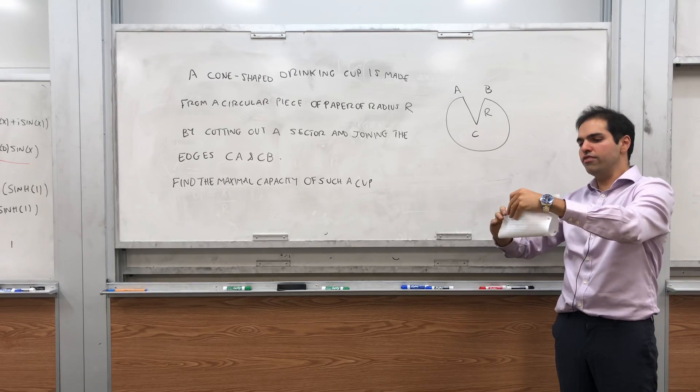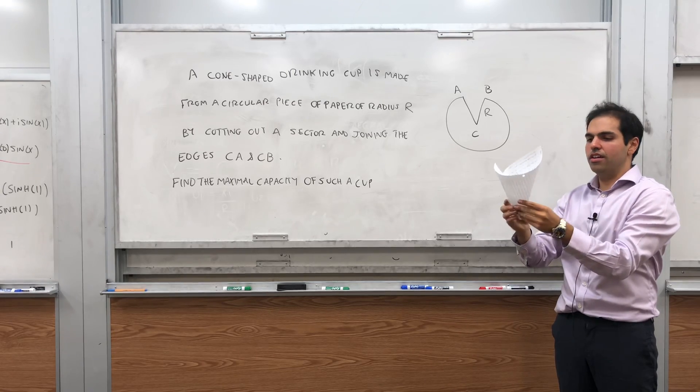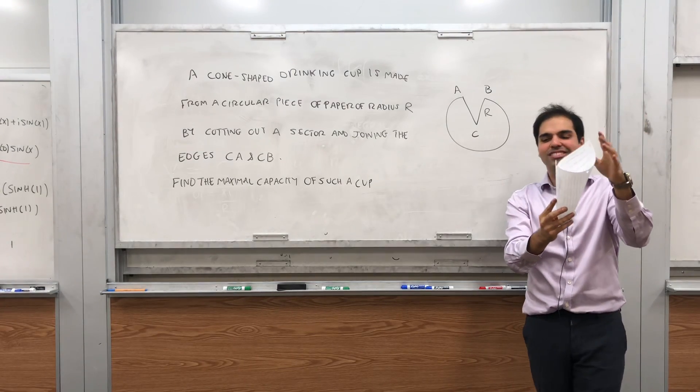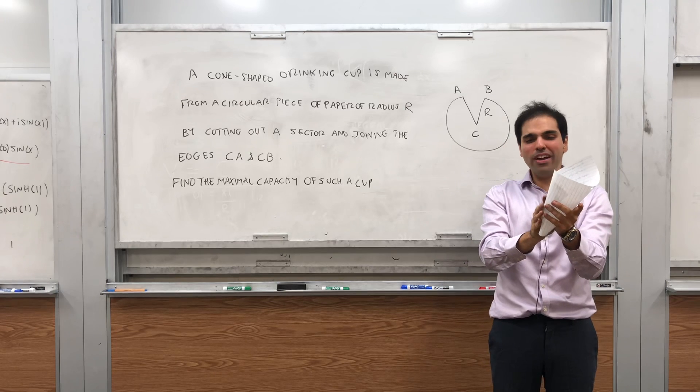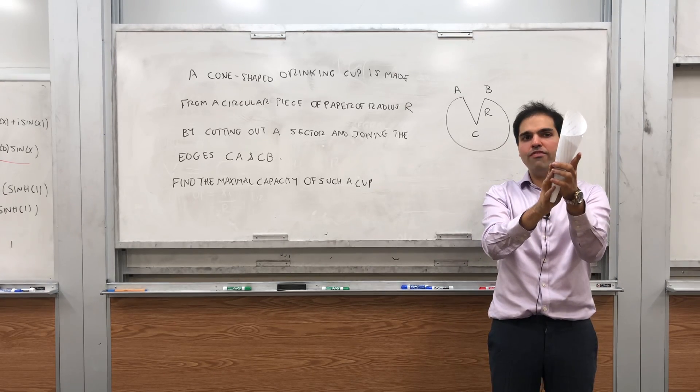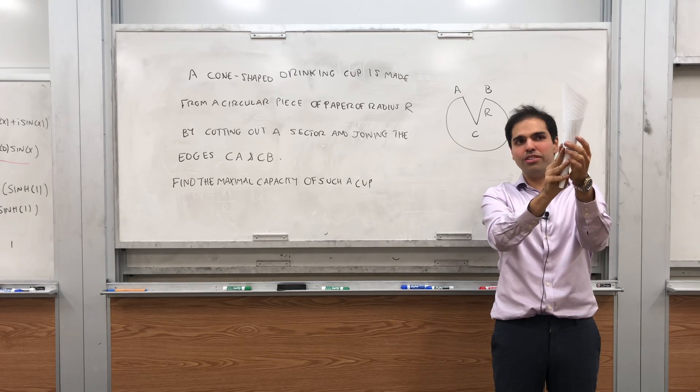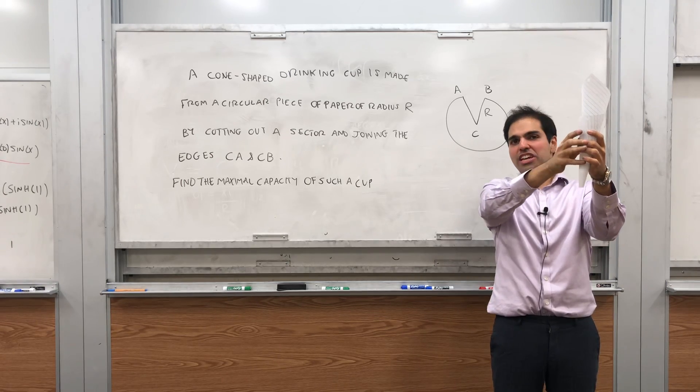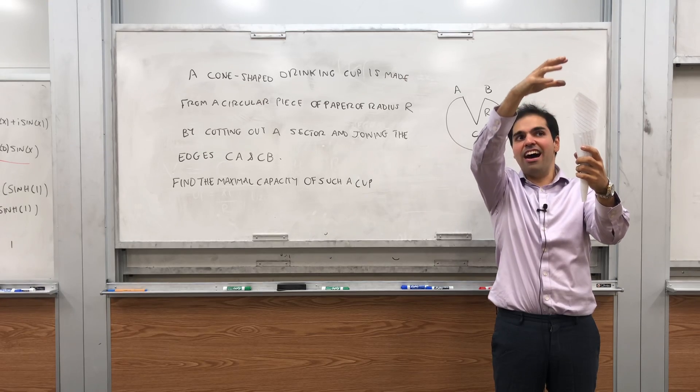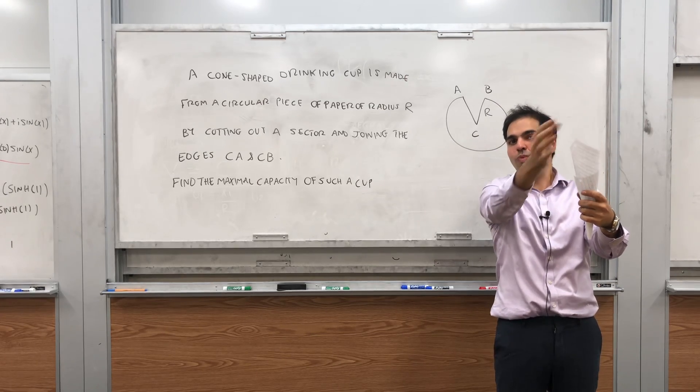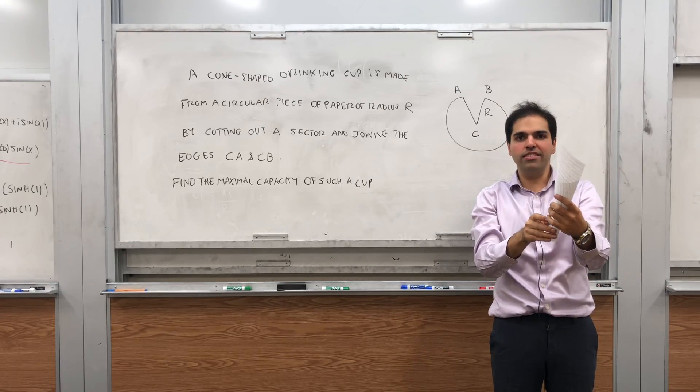That should give you some sort of a paper cup, something like that. I know it's awkward, but the point is this cup could be very fine, very acute, in which case the cup is very high but the radius is small, so maybe the volume isn't that big.